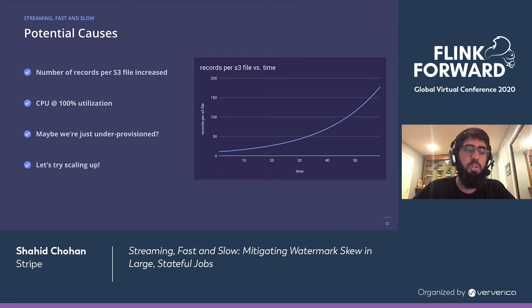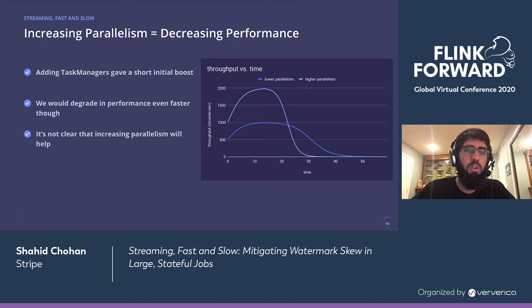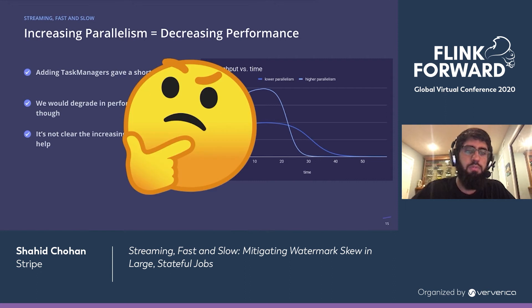We also saw that CPU was 100% utilized, so we thought maybe we're just under-provisioned and we need a bigger cluster. Naturally, we scaled up. However, we saw counterintuitive results — we initially got a boost from the increased parallelism, but performance would degrade even faster than before. We started to experience very long checkpoint times as well. It appeared that actually running with lower parallelism gave us slightly more reliability — a mystery we'll revisit later in the talk.